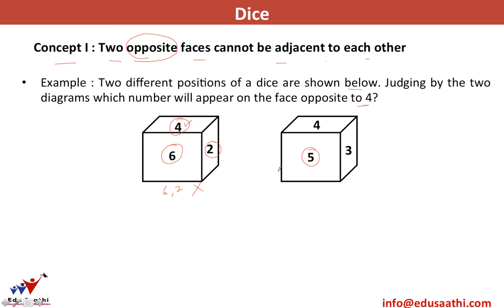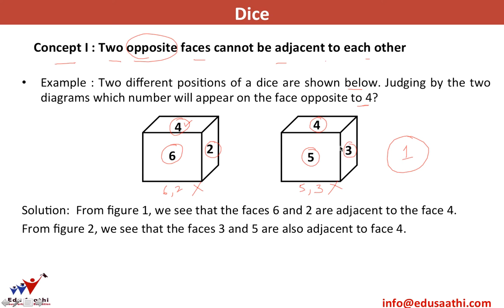In the second position, I have five which is adjacent to four, and three which is also adjacent to four. So five and three also cannot be opposite to four. Which face is left out? The face with the number one. So the number one face is opposite to face number four. From figure one, faces six and two are adjacent to face four. From figure two, faces three and five are adjacent to face four. The only left out face is face one.